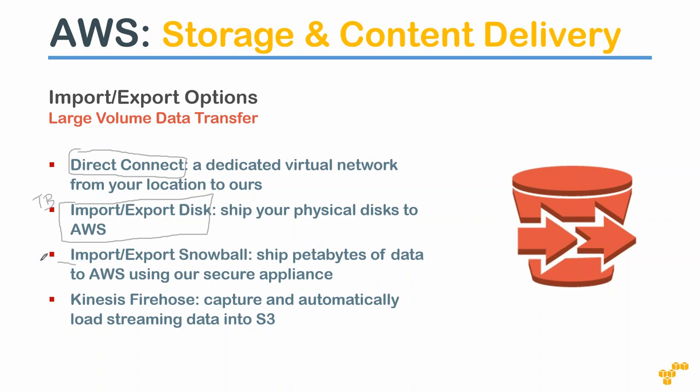For petabytes of data Amazon has Snowball, handling one to ten petabytes. For even more data Amazon introduced Snowmobile - they literally come to your data center with a truck full of disks, give you an iSCSI cable, you copy all your data to the disks inside the truck, and Amazon drives it to their data center and copies the data into your S3 bucket.